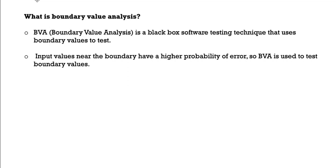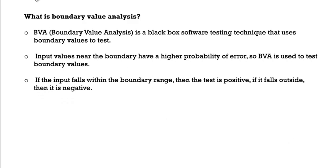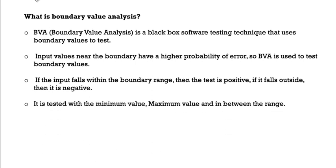If negative values like minus 1 or minus 2 are entered, the system should not accept them. If the input falls within the boundary range then the test is positive; if it falls outside then it is negative. It is tested with the minimum value, maximum value, within range, and also with in-between values such as 50, 60, or 70 — all of which fall within the 0 to 100 range.